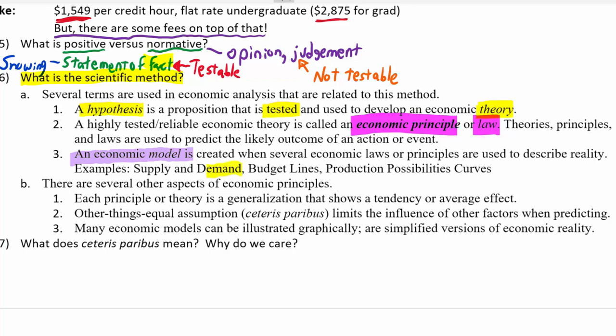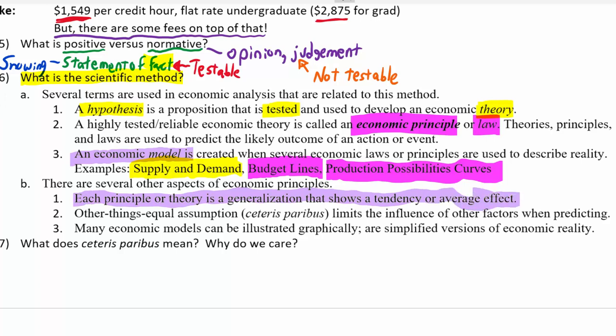A few examples of economic models are supply and demand — which we'll study in Chapter 3 — and budget lines and production possibilities curves, which we'll look at in the next video. An important thing about economic principles is that they describe an average tendency or average effect of people's behavior. For example, the law of demand says: if you raise the price of something, people will buy less. That doesn't mean everyone will buy less, but on average, in general, we're going to see people buying less — there might be exceptions to the rule.